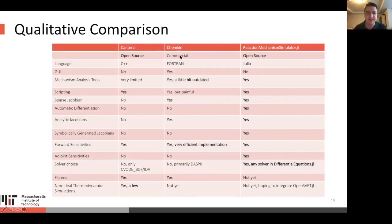Here's a little qualitative comparison of what these softwares are. Cantera and RMS are open-source. Chemkin is commercial. Cantera is in C++, Chemkin in Fortran, RMS in Julia. Chemkin has a GUI. The other two open-source softwares do not. In terms of mechanism analysis tools, Cantera's are very limited, whereas RMS and Chemkin both have a significant library of these, although Chemkin's have the advantage that they are in a GUI, but the disadvantage that they're a bit slow and can be difficult to work with. In terms of scripting, all three of these softwares, it's possible to script them. Chemkin is particularly not designed for it and can be quite painful to work with.